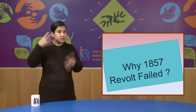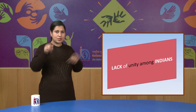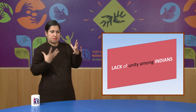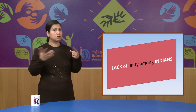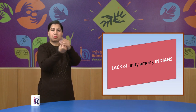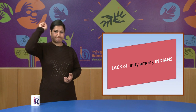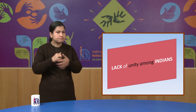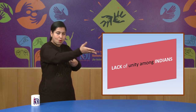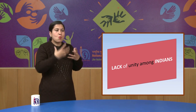The first cause was the lack of unity among Indians. The most important cause that led to the failure of the revolt of 1857 was the lack of unity among the Indians. Let us first understand the different objectives of those people who participated in the revolt. The soldiers of Bengal wanted to end the British rule in India and make Mughal King Bahadur Shah Zafar the King of India.